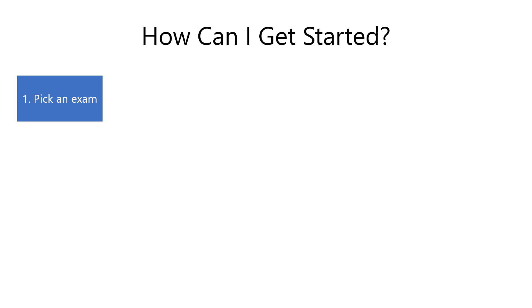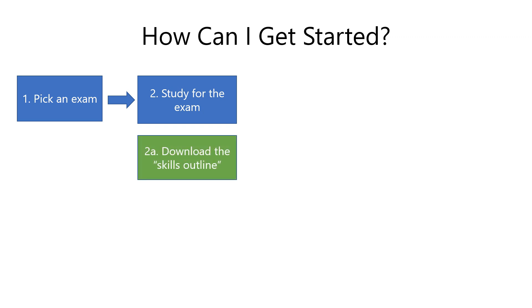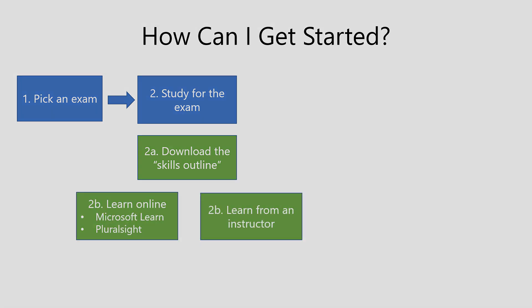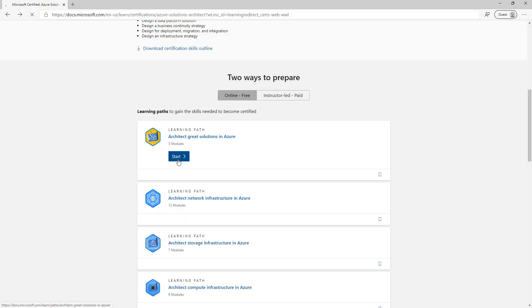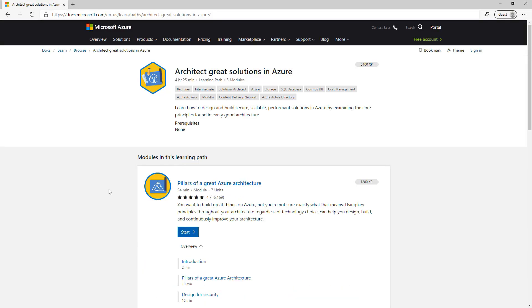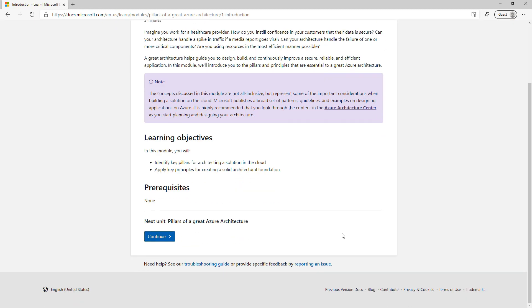So how do you get started? First, you pick an exam to take that counts toward the certificate that you want to acquire. You can pick the certificate based on your level of expertise and what you want to learn. Once you've picked an exam, you need to study for it. On the exam website, you can download the skills outline, which tells you exactly which skills are measured on the exam, and then you can learn these skills either online or instructor-led. Microsoft offers free online certificate training in the form of Microsoft Learn, which guides you through a learning path specifically developed for the certification.